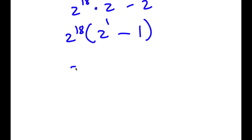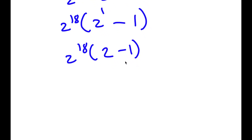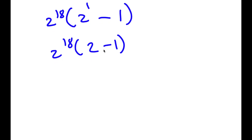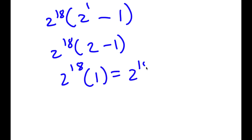Now 2 to the power of 1 is the same as simply 2, so I have 2 minus 1, and 2 minus 1 is 1. So I have 2 to the power of 18 times 1, which is equal to 2 to the power of 18.